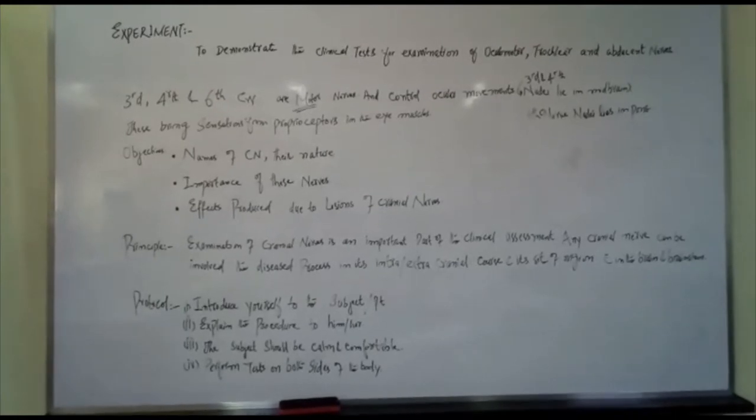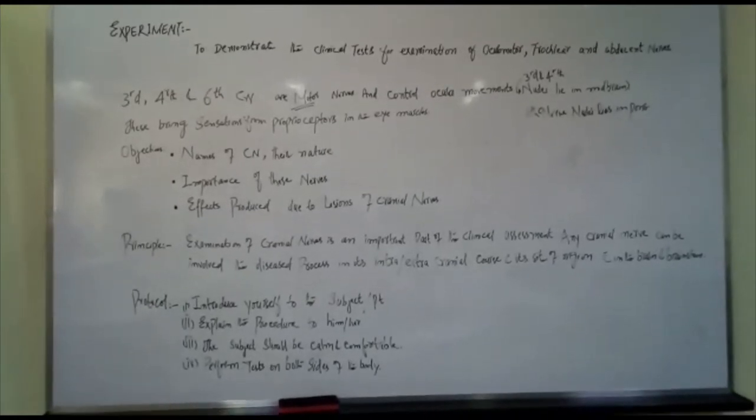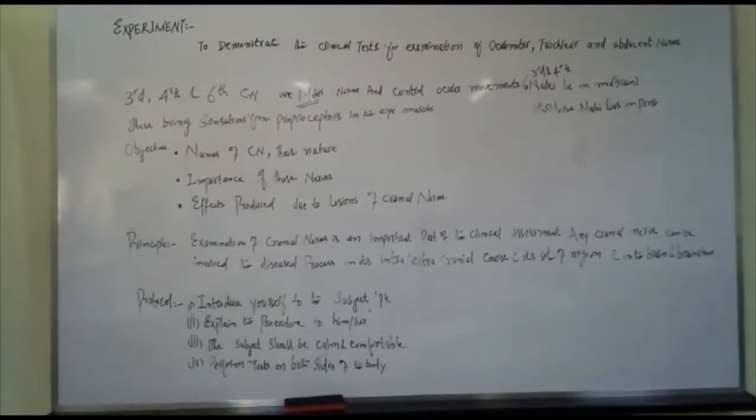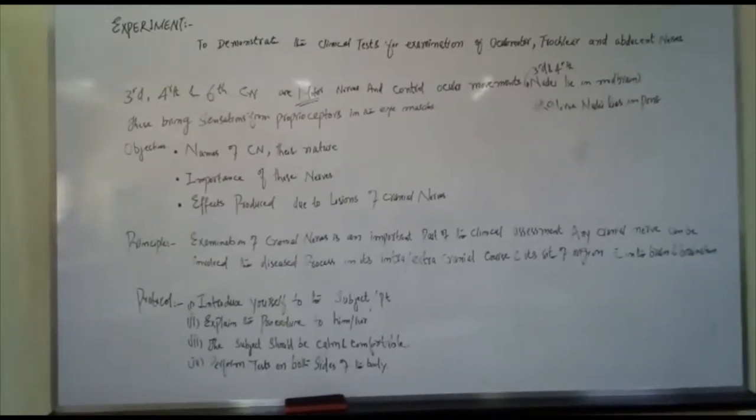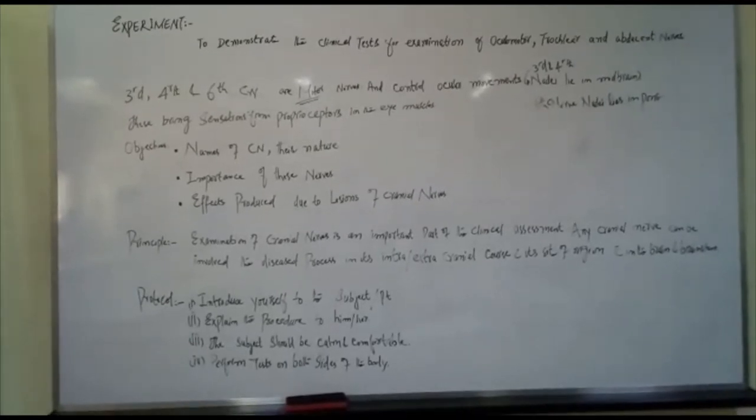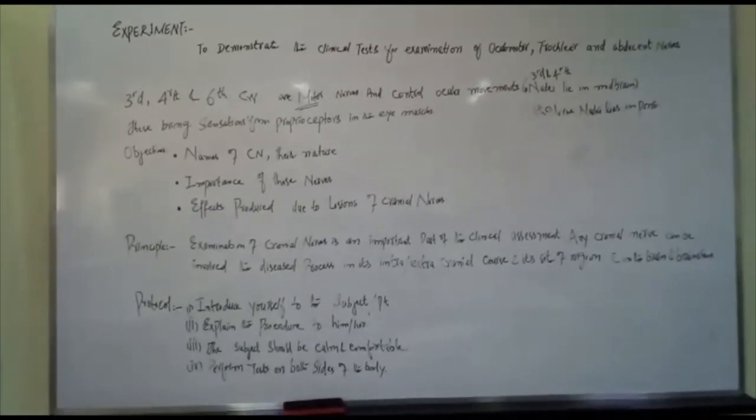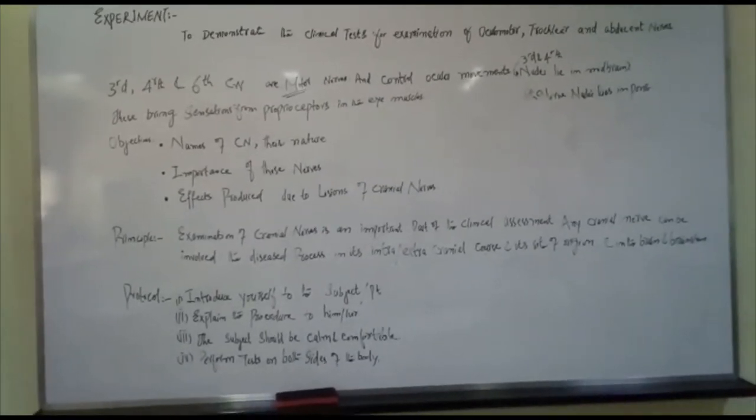These cranial nerves bring sensations from proprioceptors in the eye muscles. The objective of this practical is to learn names of cranial nerves, their nature, importance of these cranial nerves, and effects produced due to lesions of cranial nerves.